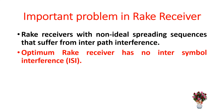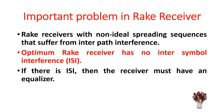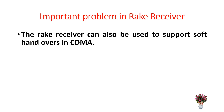Important problems in the rake receiver include: rake receivers with non-ideal spreading sequences suffer from inter-path interference. The optimum rake receiver has no inter-symbol interference (ISI); if there is ISI, then the receiver must include an equalizer.